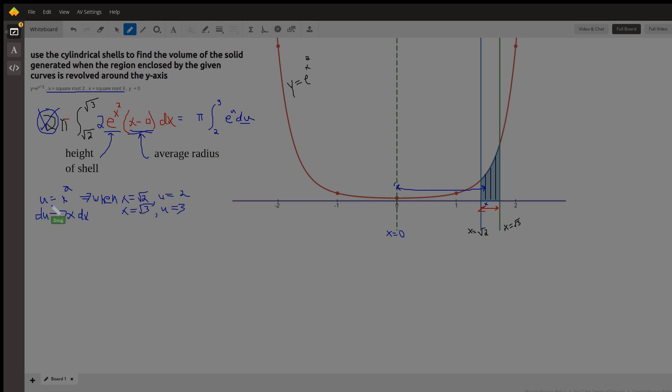And the key is that when x equals the square root of 2, which was the lower bound when we were in terms of x, then u is x squared or 2. So there is what we want to evaluate. And that's pretty simple to do because the antiderivative of e to the u is e to the u.